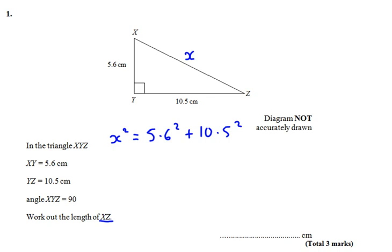We can do that on our calculator. x squared equals 31.36 plus 110.25. We add those together and then find the square root because we want x, which is the square root of 141.61.